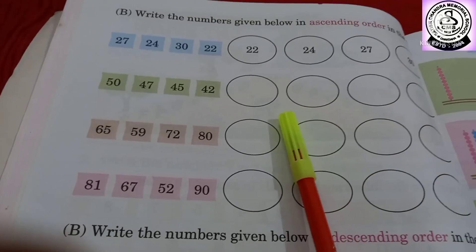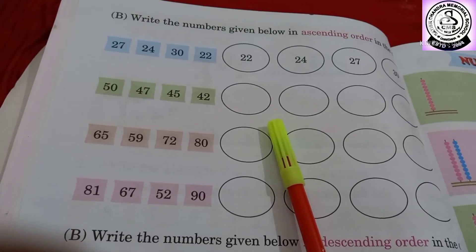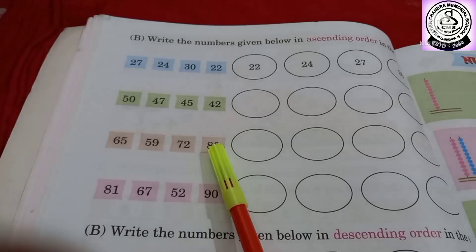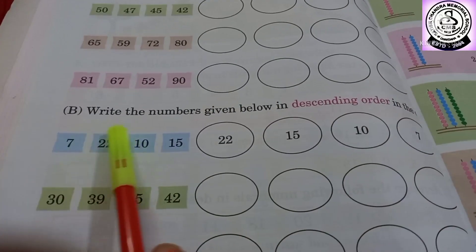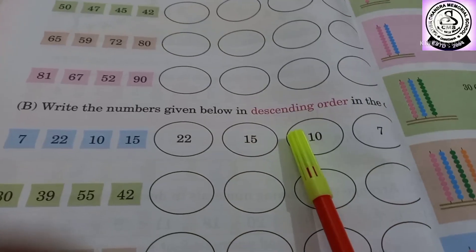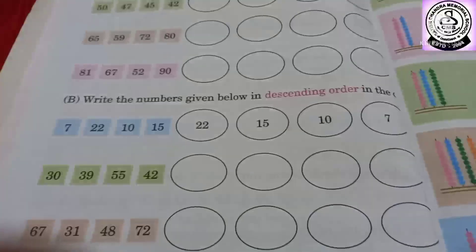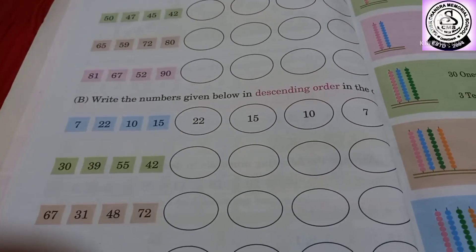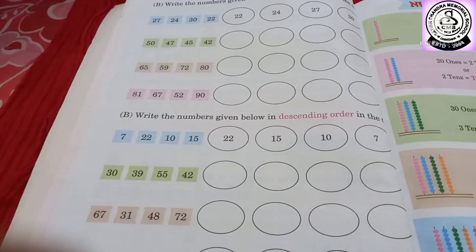So please everybody, you have already learned ascending order. So please number 3 and 4 you have to do it by yourself. Then number B. Write the numbers given below in descending order. So here you have to do descending order. Number 1 already done.